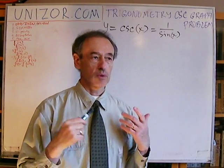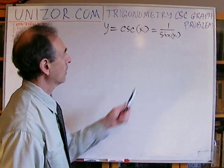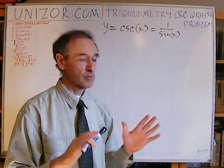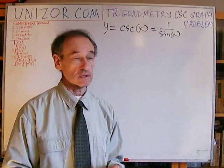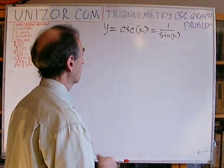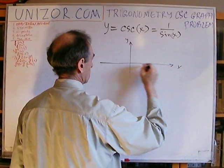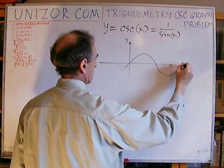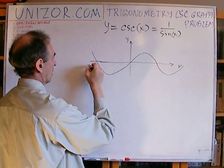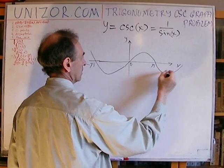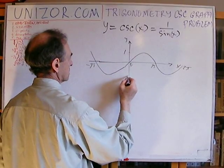I will start with just the original graph and then we will transform it. I don't remember any graphs other than sine and cosine — everything else I derive. So let's derive this graph from the sine. First we will draw the sine, which looks like this. These are minus pi, zero, pi, two pi, etc. This is one, this is minus one.